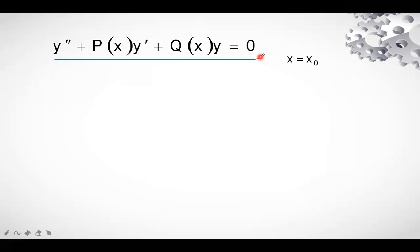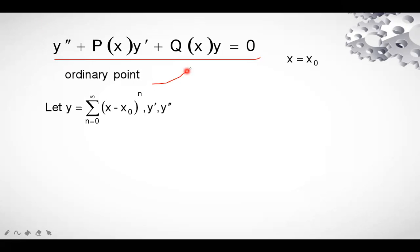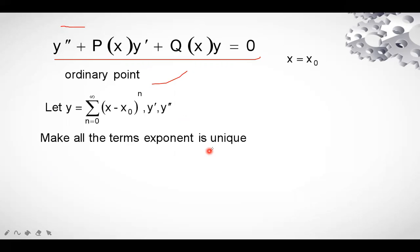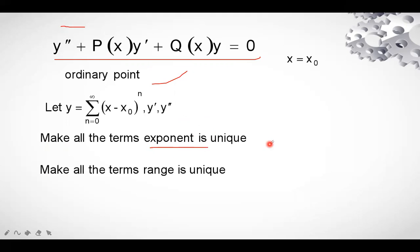If x₀ is an ordinary point, we continue. We assume y = Σ (n=0 to ∞) cₙ(x − x₀)ⁿ. After that, we calculate y' and y'', substitute them in the given equation, and make all the terms' exponents unique by introducing a dummy variable.